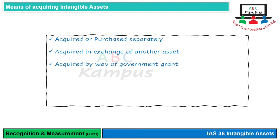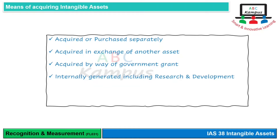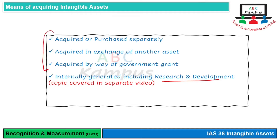A third way is by government grant, which can be used to acquire an intangible asset. A fourth way is internally generated — you can develop software, technology, music, or movies internally. Internally generated items involving research and development will be covered in a separate video.